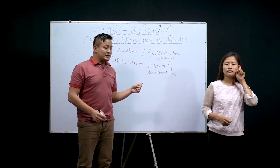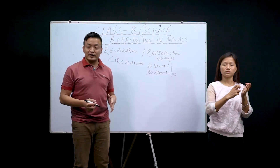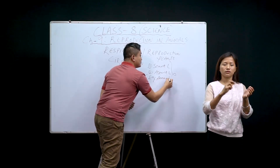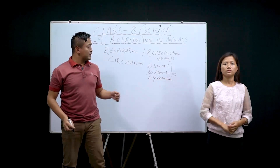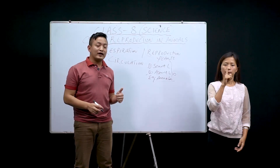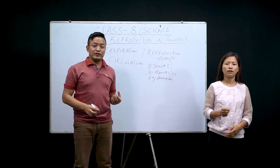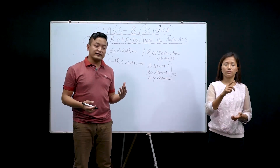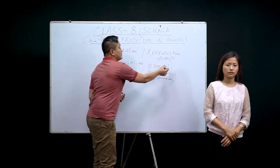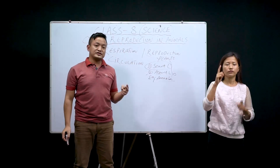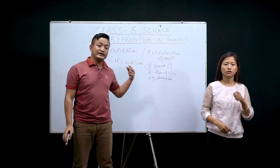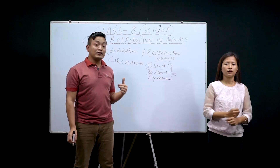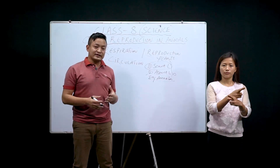Asexual reproduction involves microorganisms like amoeba. For them it's just one parent — they don't have a male reproductive part and a female reproductive part; just one reproductive part. For sexual mode of reproduction, there are two parts like in plants — a female reproductive part and a male reproductive part. We will study all this in detail today.